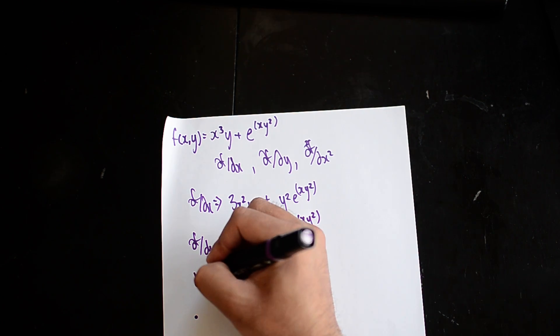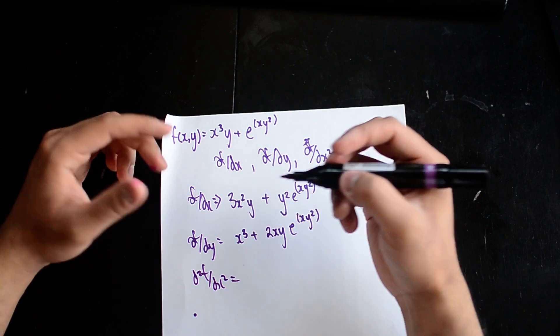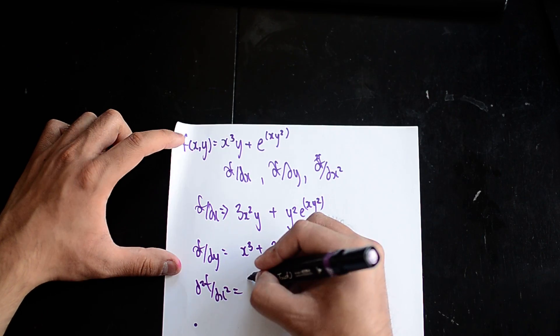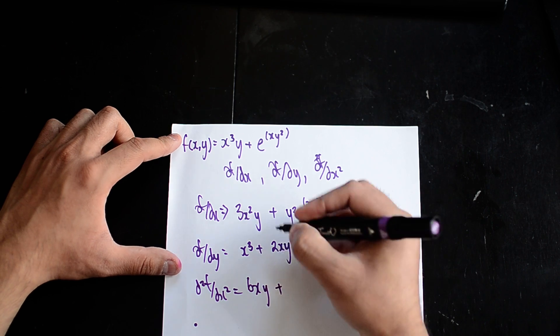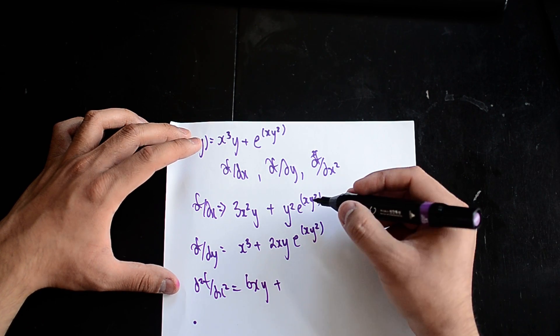Now showing you how to do d²f/dx², we merely get df/dx and differentiate it again. So we're going to have 6xy: 3x² differentiated to 6xy plus y²e^(xy²).